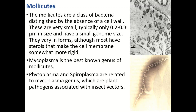These are very small, typically 0.2 to 0.3 micrometers in size, and have a small genome size. They vary in forms, although most of them have sterols that make the cell membrane somewhat more rigid. Mycoplasmas are the best example of these mollicutes. Phytoplasma and spiroplasmas are related to the mycoplasma genus, which are plant pathogens associated with insect vectors. So mostly phytoplasmas and spiroplasmas are insect-vector-borne pathogens.